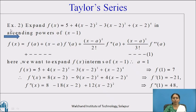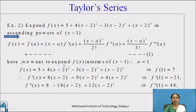Now let us solve an example based on this expression. Example number 2: Expand f(x) = 5 + 4(x−2)² − 3(x−2)³ + (x−2)⁴ in ascending powers of (x−1). We will use the Taylor series expansion in ascending powers of (x−a), calling it expression number 1. Since we want to expand in terms of (x−1), the value of a is 1.